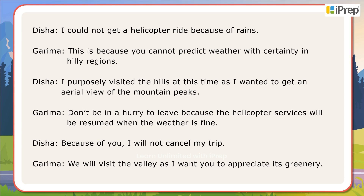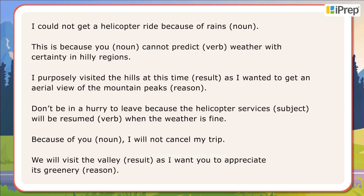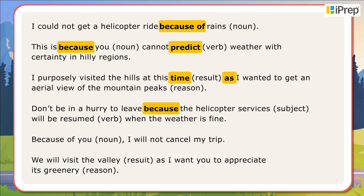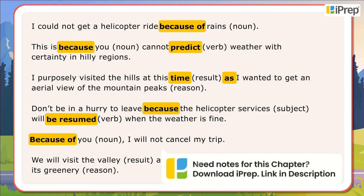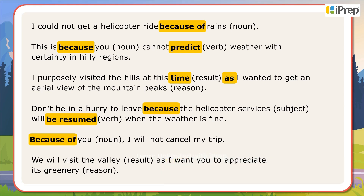Recap of the conversation: I could not get a helicopter ride because of rains. This is because you cannot predict weather with certainty in hilly regions. I purposely visited the hills at this time as I wanted to get an aerial view of the mountain peaks. Don't be in a hurry to leave because the helicopter services will be resumed when the weather is fine. Because of you, I will not cancel my trip. We will visit the valley as I want you to appreciate its greenery.